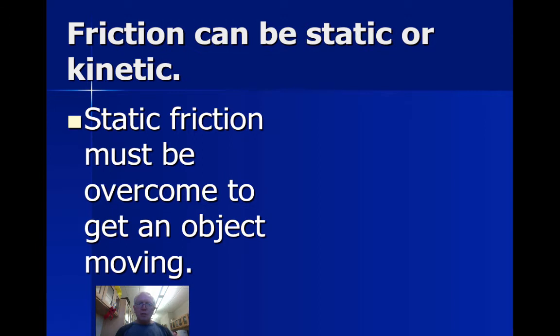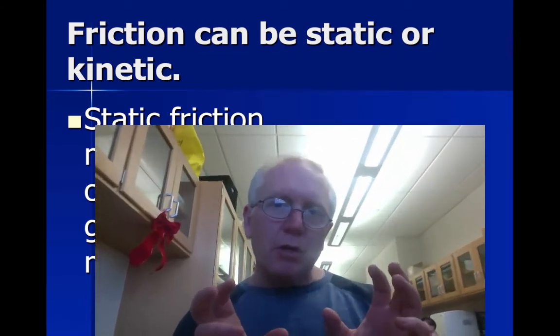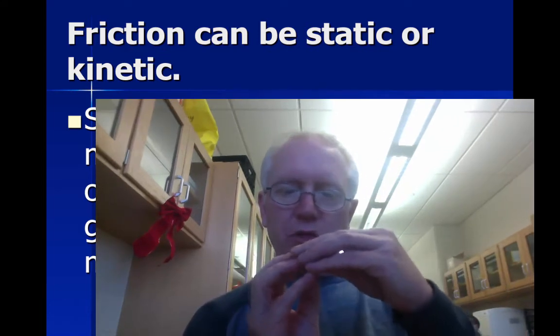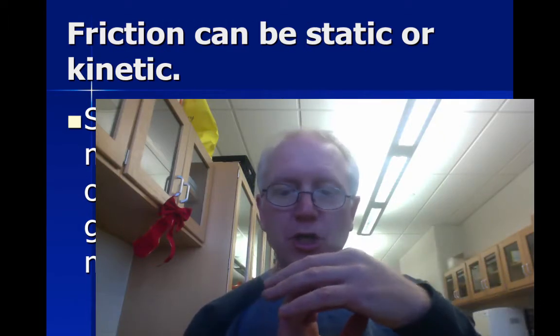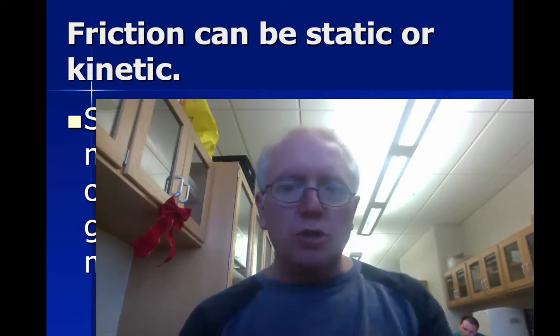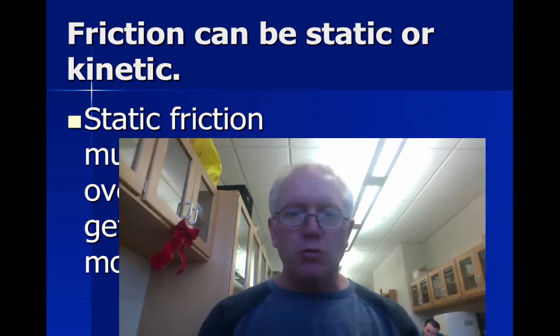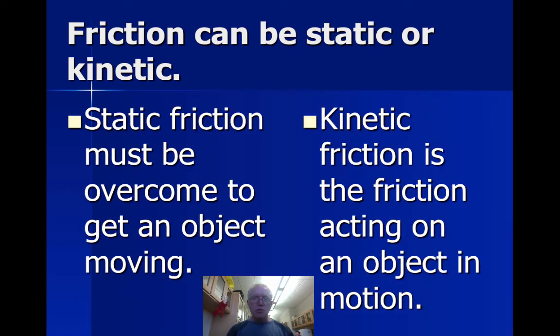Really, at a microscopic level, the surfaces are entwined with each other. One is overlapping the other, and that's what makes the friction. But once you're sliding across the surface, you have less friction to deal with. So the kinetic friction is when you're moving, and the static friction is when you're stationary.